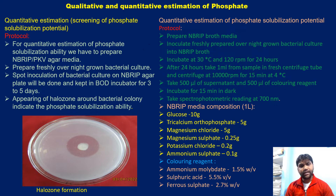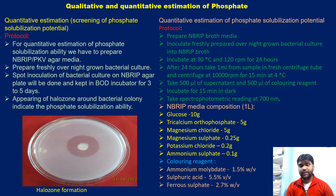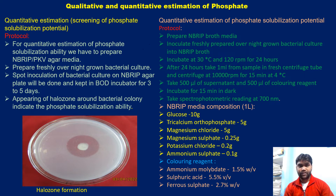There is a need for a sustainable approach by which the phosphate already present in the soil can be made available in a plant-usable form. Phosphate solubilizing bacteria have great potential to solubilize the insoluble phosphate already present in the soil into soluble forms available for the plant. This is the importance of phosphate solubilizing bacteria.